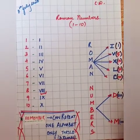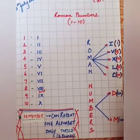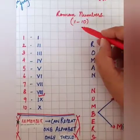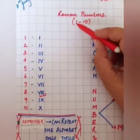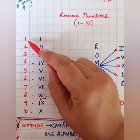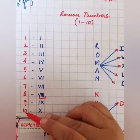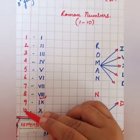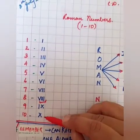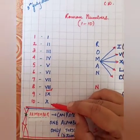Now dear students, let's start to learn how to write Roman numerals 1 to 10. The numbers 1 through 10 are Hindu-Arabic numbers, and the ones written in blue on this side are the Roman numbers.